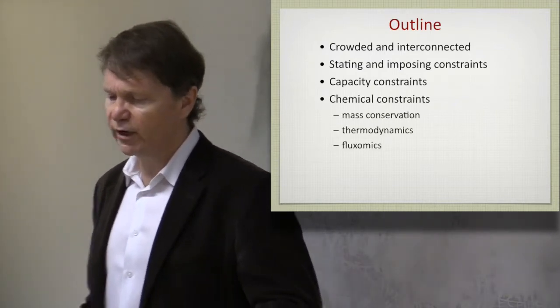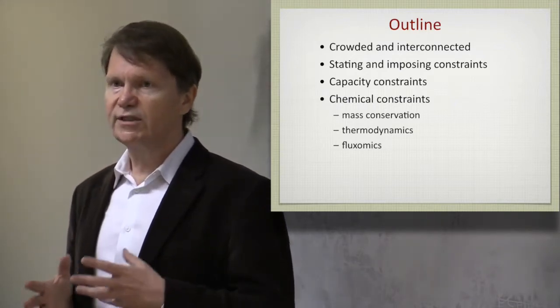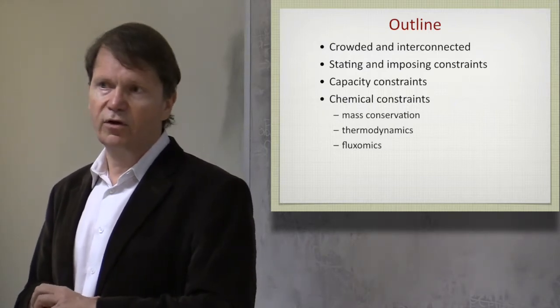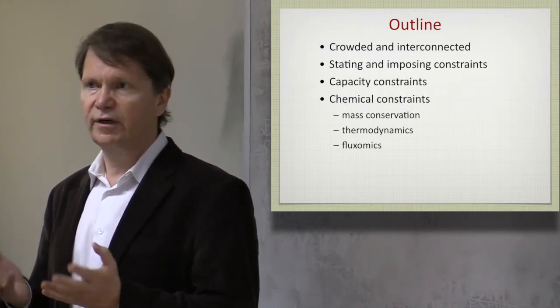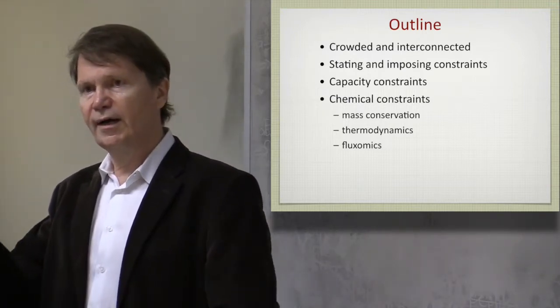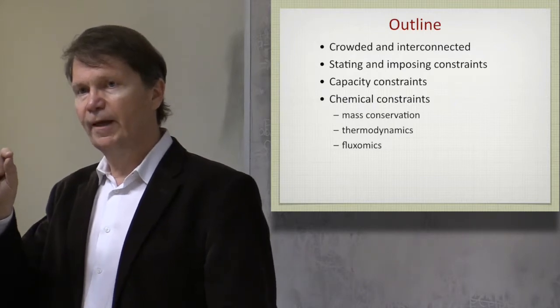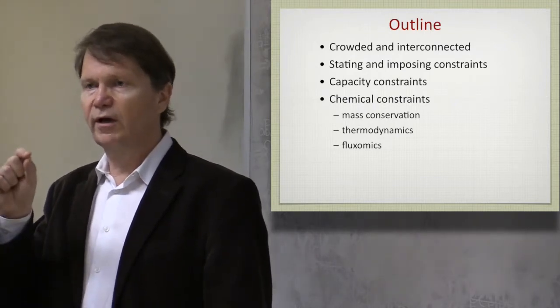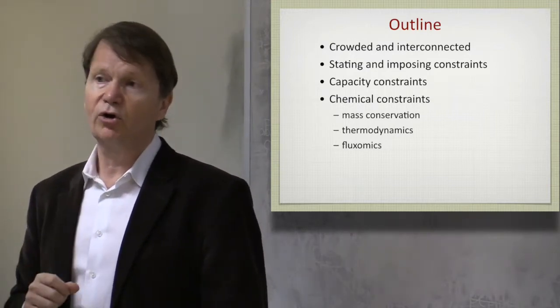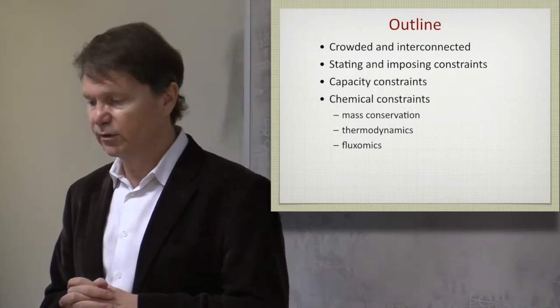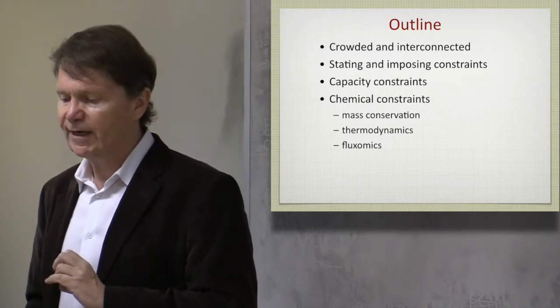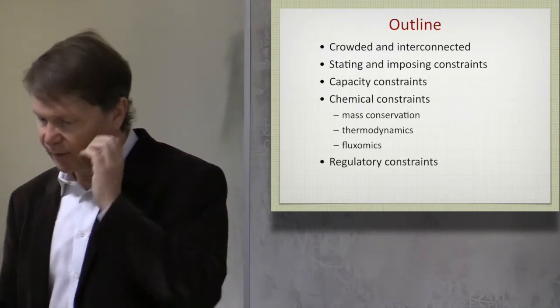There are a few chemical constraints that we need to talk about because these are nice. These you can describe with equations and you can impose them. So there are the flux balances or mass conservation, conservation of elements, thermodynamics. And we can now put labels through a network where we just put an isotope in a particular location in a molecule and watch it go through the network.